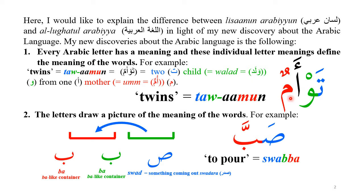Every letter has a meaning which in turn defines the meaning of the word. My second discovery is that these letters actually draw a picture of the meaning of words. For example, the word 'soba' means to pour, from the root letters Swad-Ba-Ba. Swad means something coming out, and Ba looks like a container — something coming out and going into another container. Pouring is basically transferring something from one container to another.